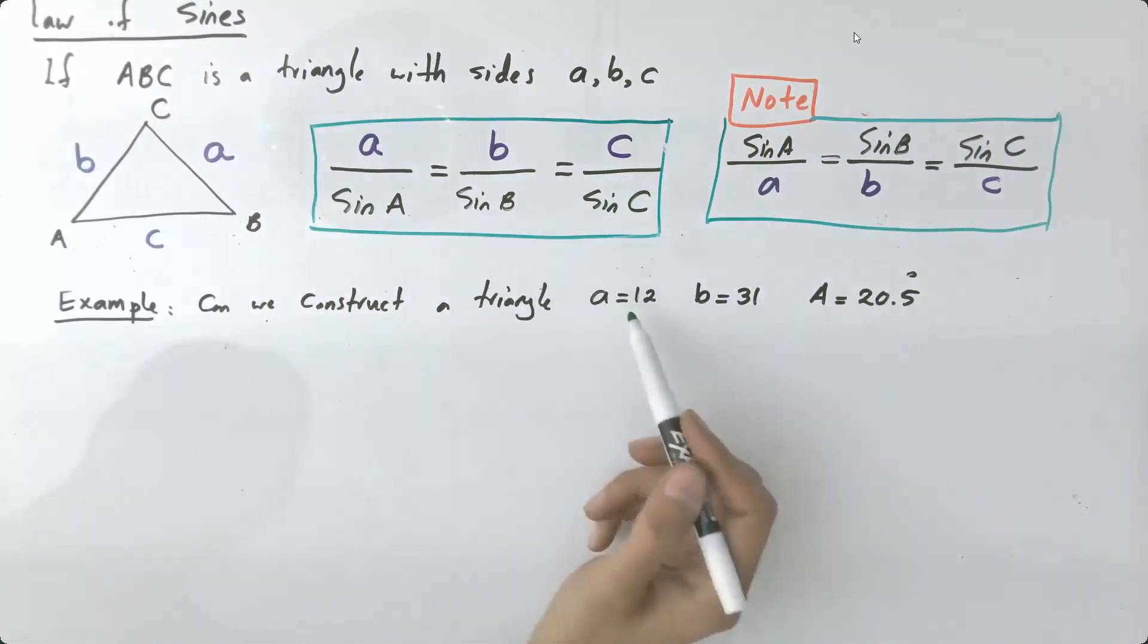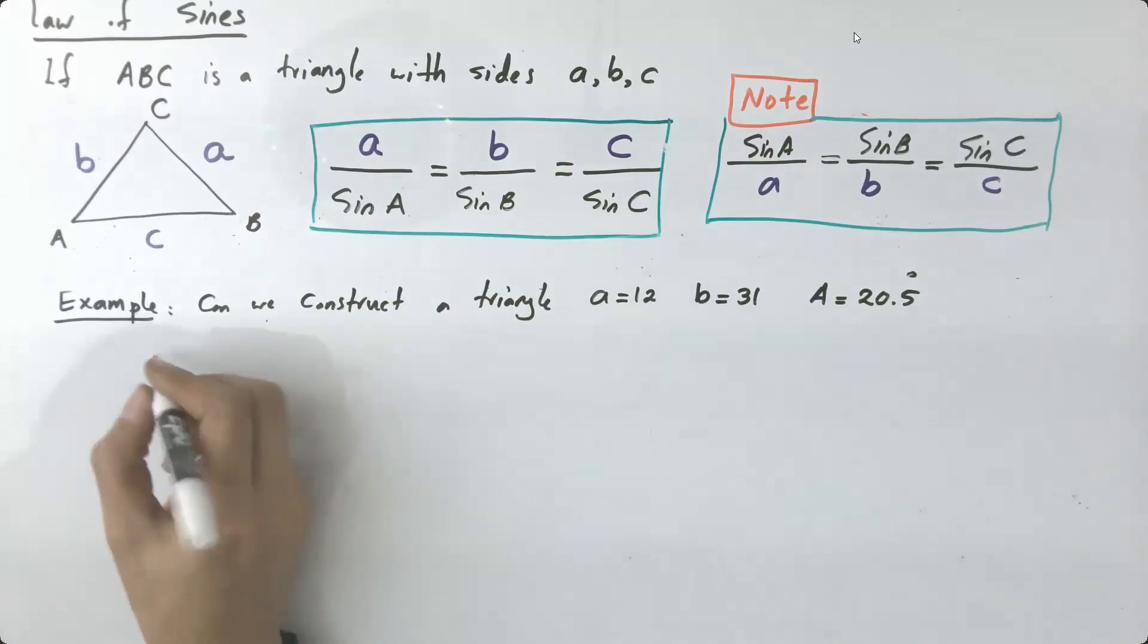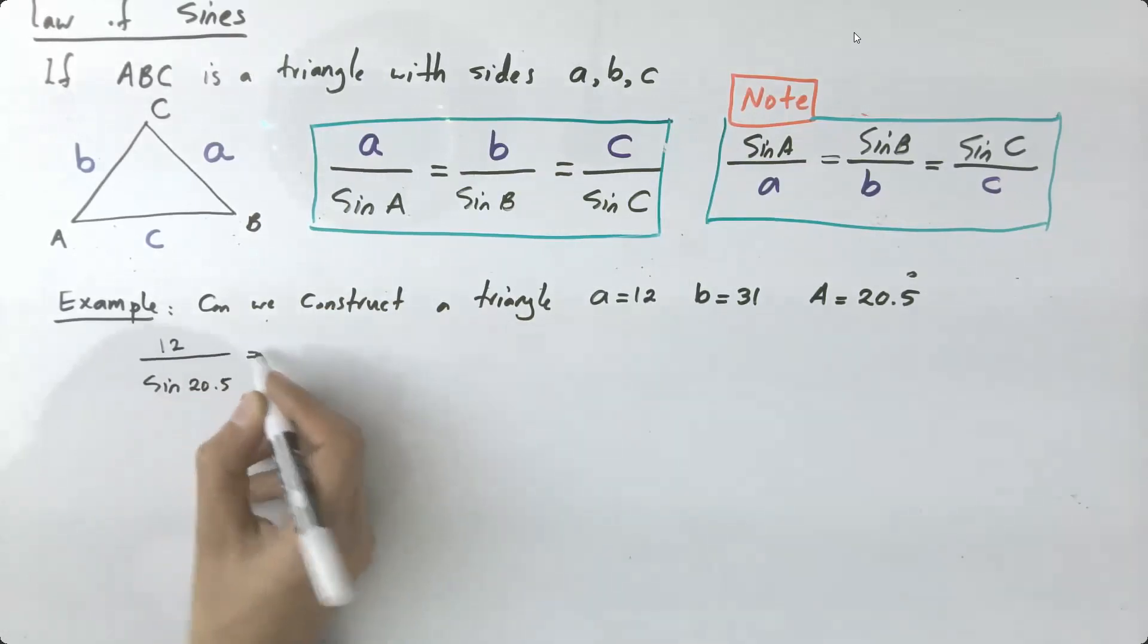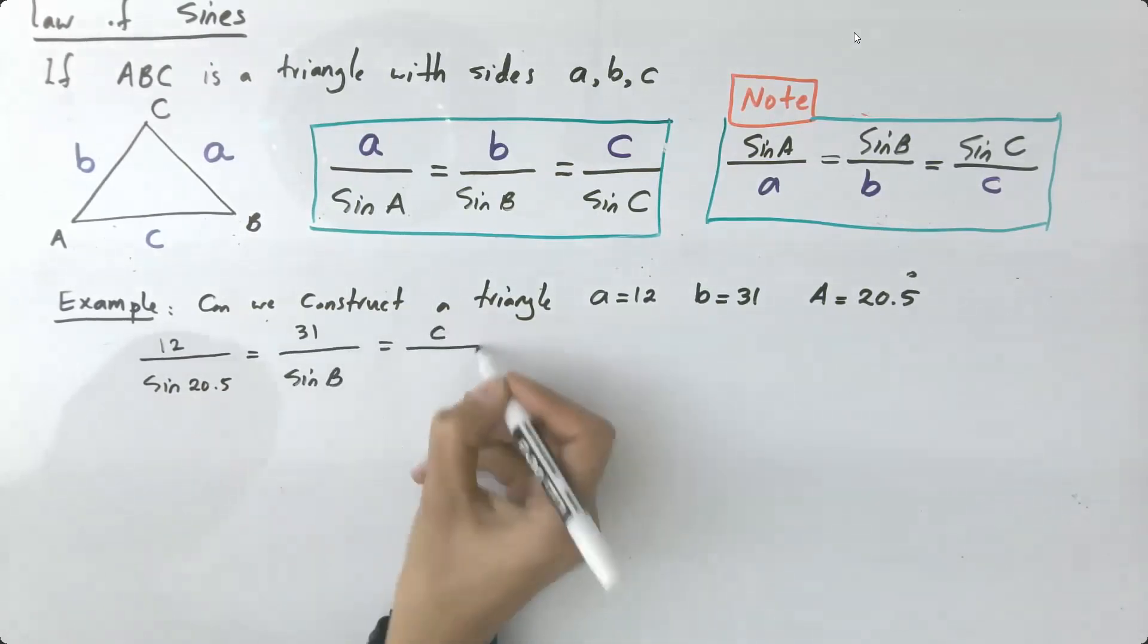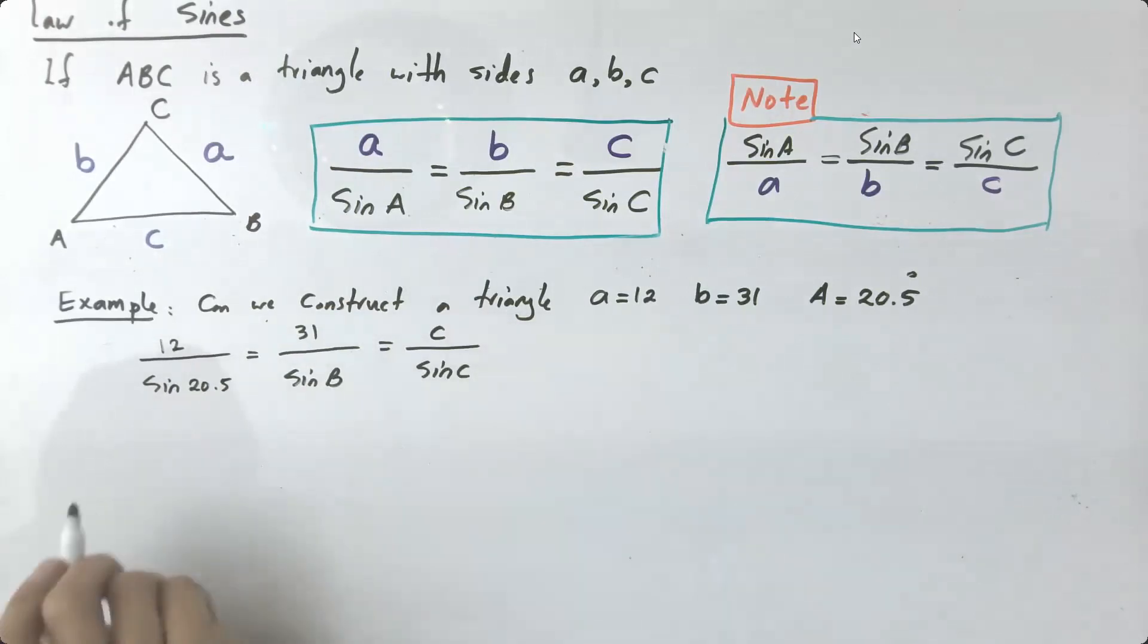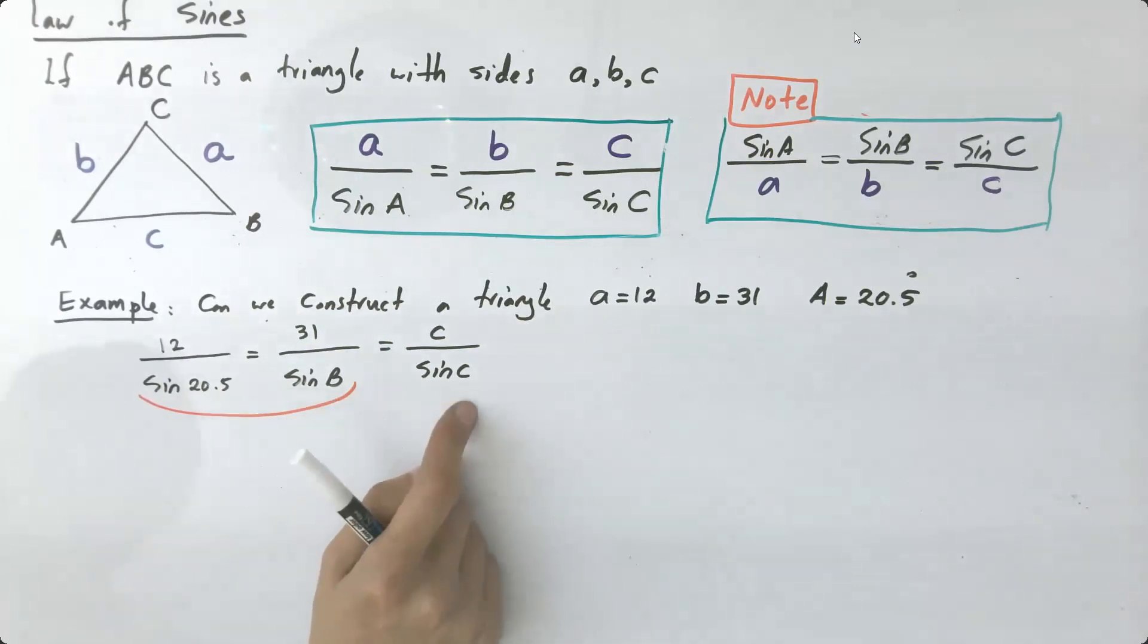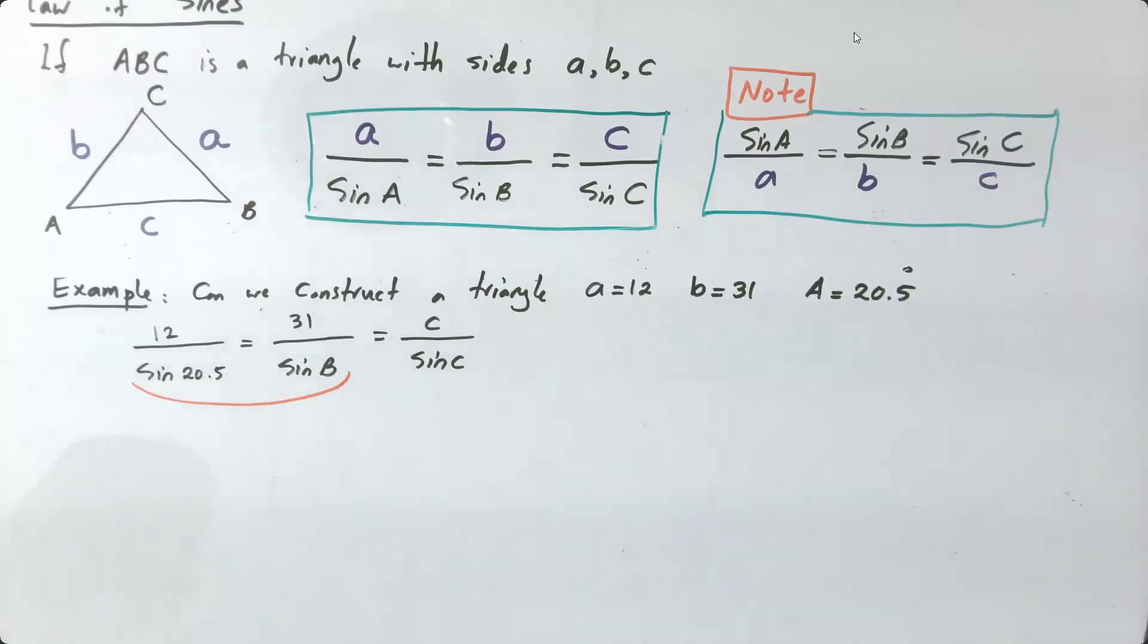We have the law of sines. So I have 12 divided by sine of 20.5 degrees, which is equal to B, 31 divided by sine of B, which is equal to C over sine of angle C. Well, let's start, take these two fractions and set them equal to each other. Then after finding B, the sum of these angles must be equal to 180 degrees.